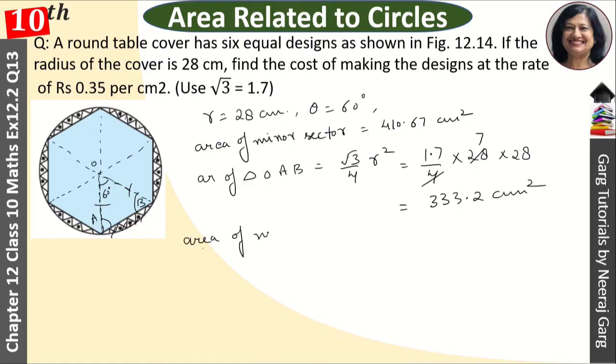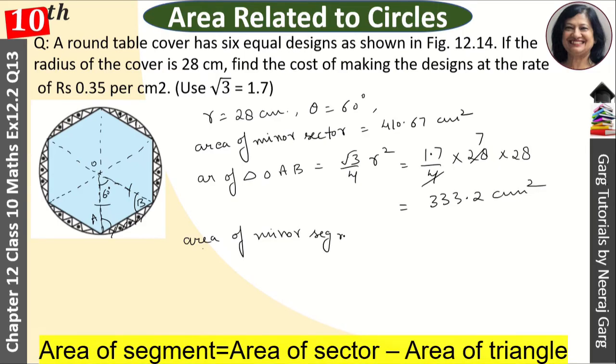This is the area of minor segment. Minor segment, that is equal to what will happen, that is area of sector minus area of triangle. So area of sector 410.67 minus 333.2 equals 77.47 centimeter square, area of minor segment.